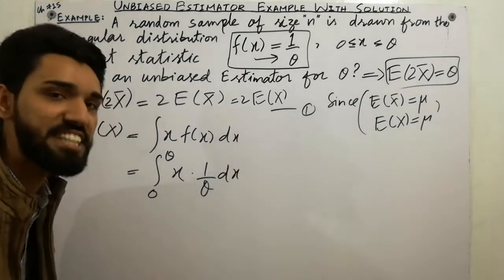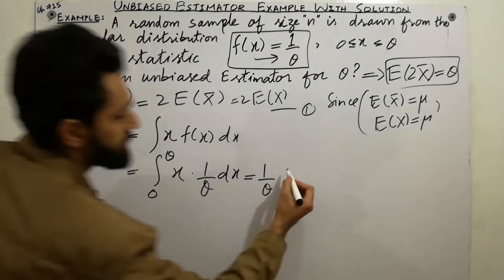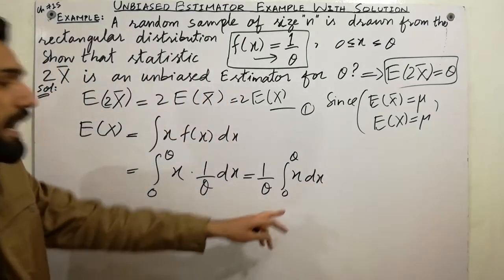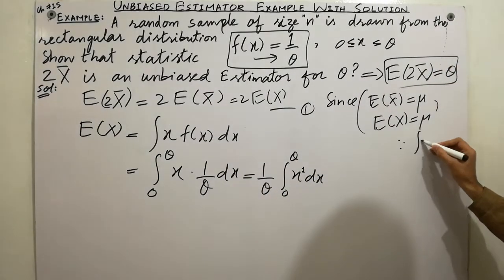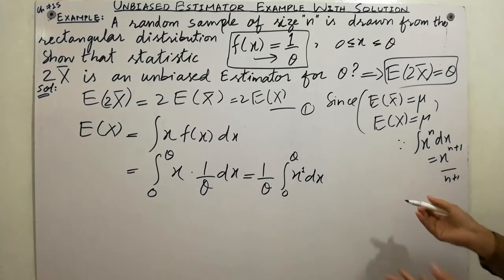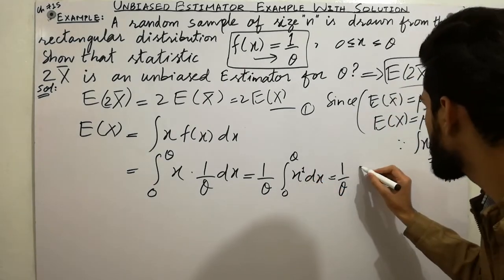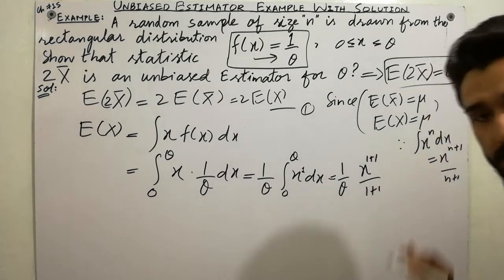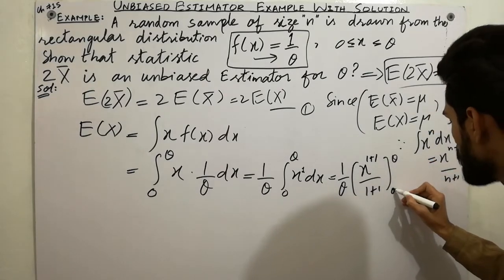Since 1/theta is a constant, I put it outside: (1/theta) × integral from 0 to theta of x dx. Using the formula integral of x^n dx = x^(n+1)/(n+1), we get (1/theta) × [x^(1+1)/(1+1)] from 0 to theta, which simplifies to (1/theta) × [x²/2] from 0 to theta.